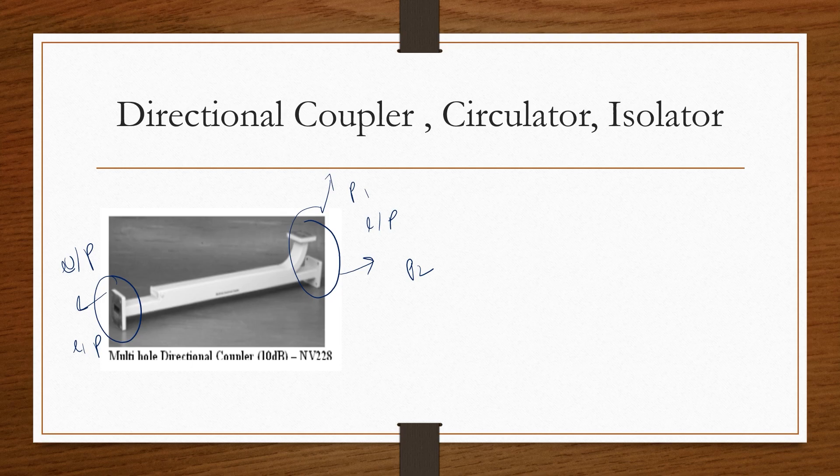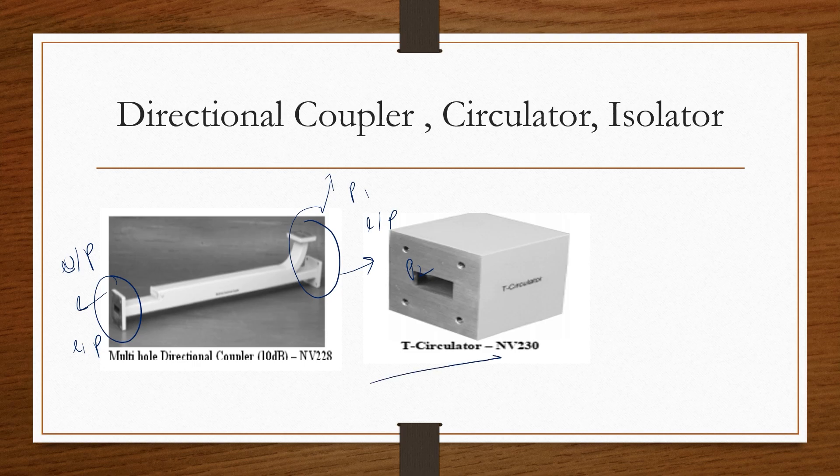Next, passive device is circulator. So circulator is a non-reciprocal device that guides microwave signals in one direction. Next is again isolator, a non-reciprocal device.